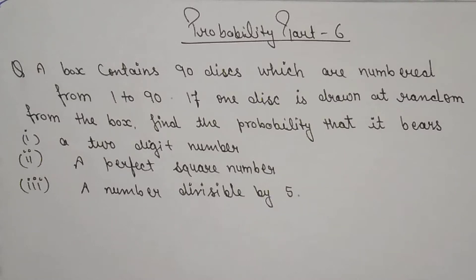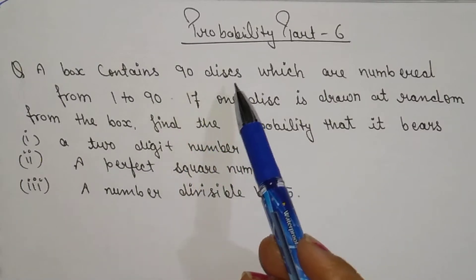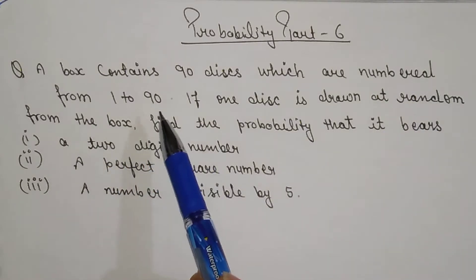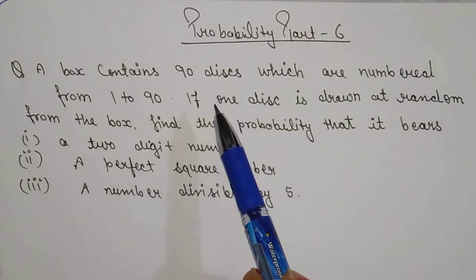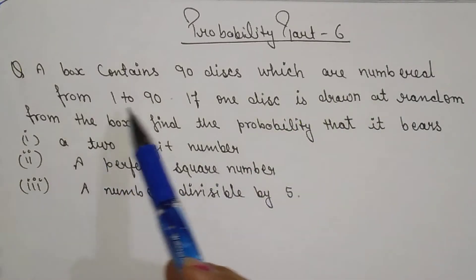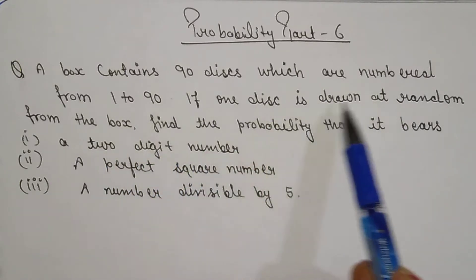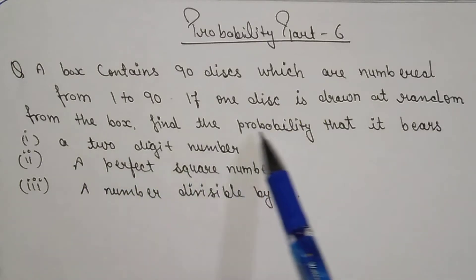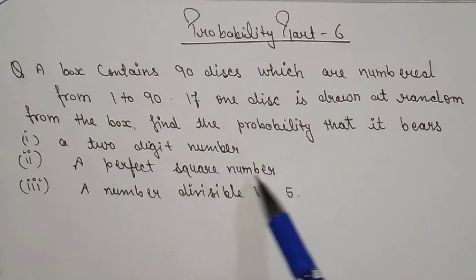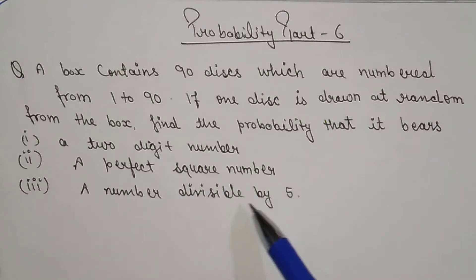Good morning students, I hope you all are doing well. Today I'm going to discuss the next part from the probability chapter. The question is: a box contains 90 discs which are numbered from 1 to 90. If one disc is drawn at random from the box, find the probability that it bears (a) a two-digit number, (b) a perfect square number, (c) a number divisible by 5.